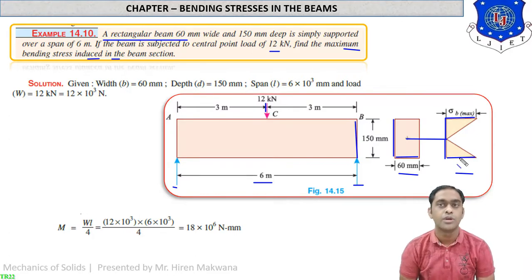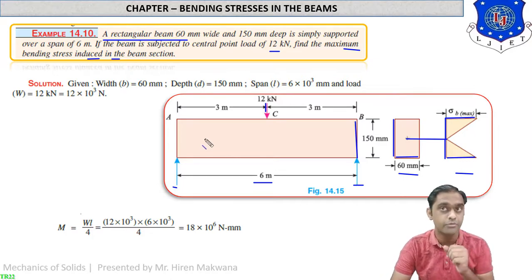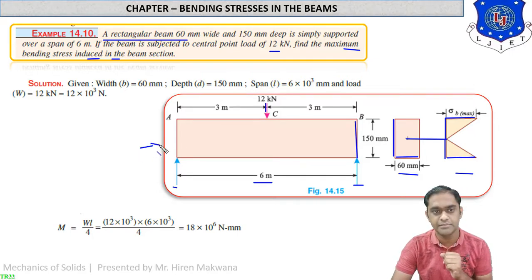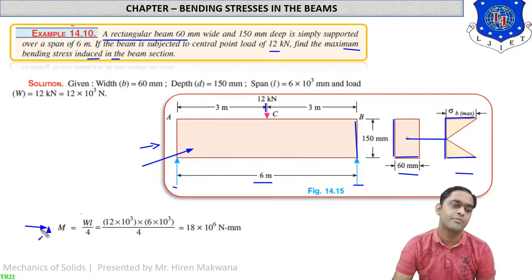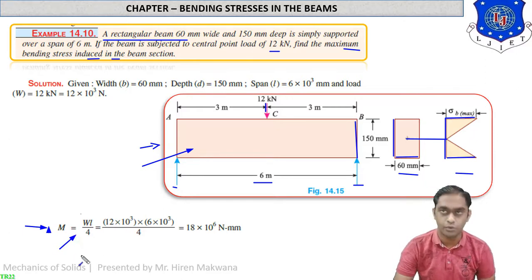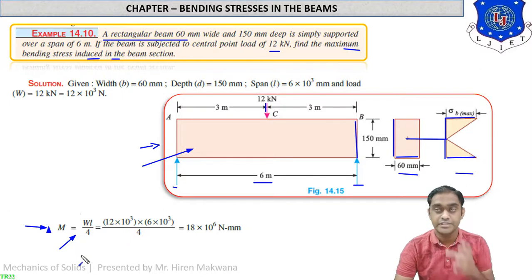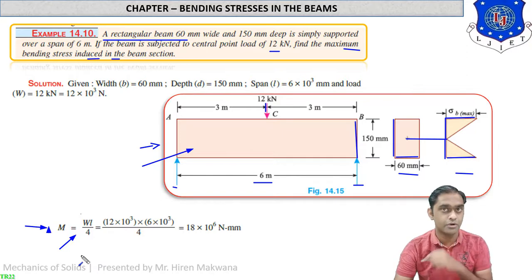When the beam is simply supported and subjected to a central point load only, the bending moment formula is M = WL/4. This is a fixed formula to remember for a simply supported beam with central point load.